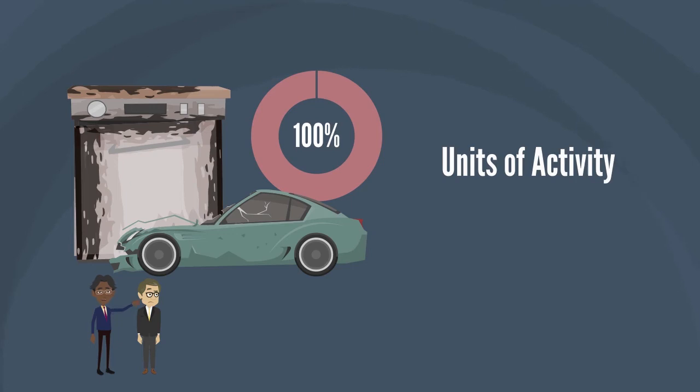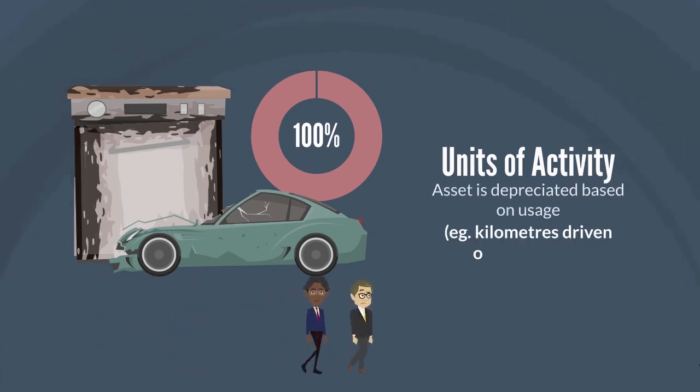The second method is units of activity, where the asset is depreciated based on usage, like kilometers driven or hours used.